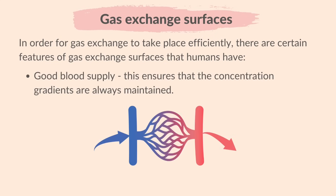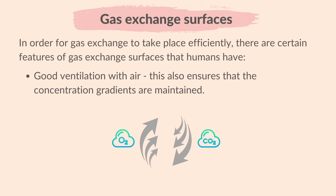A good blood supply ensures that concentration gradients are always maintained — new deoxygenated blood is always arriving and oxygenated blood is constantly being carried away. Good ventilation with air also ensures that the concentration gradients of carbon dioxide and oxygen are maintained.